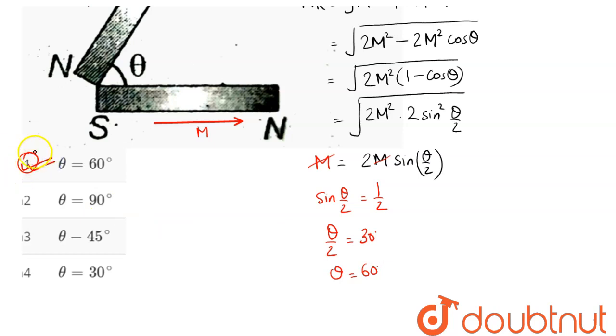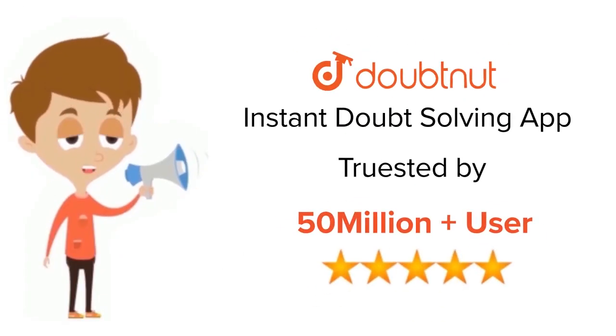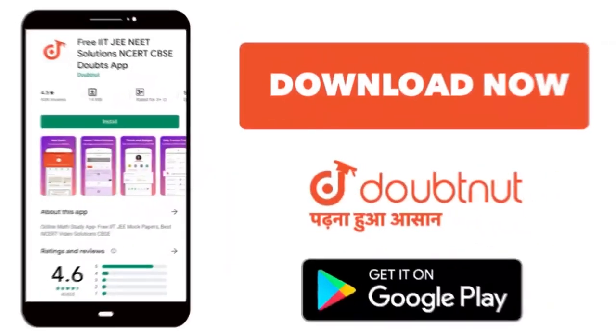So amongst the four options, option number one is the correct answer. Hence one is our answer. For class 6 to 12, IIT JEE and NEET level, trusted by more than 5 crore students, download Doubtnet app today.